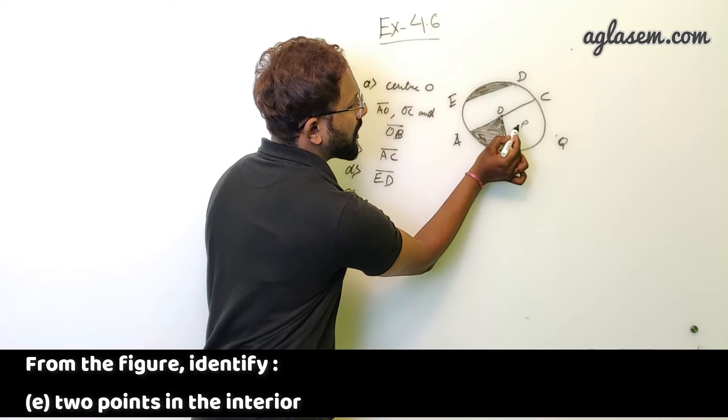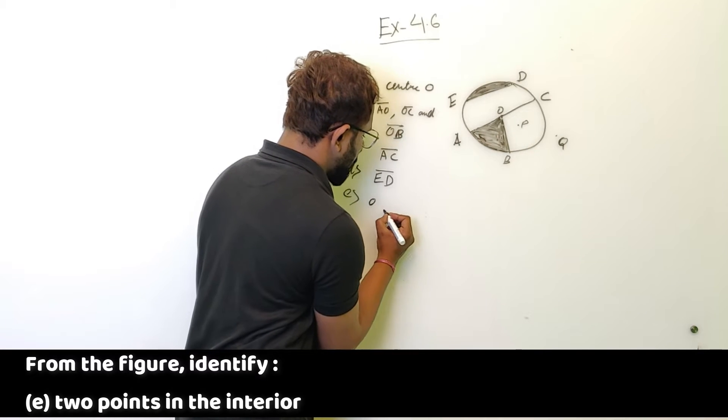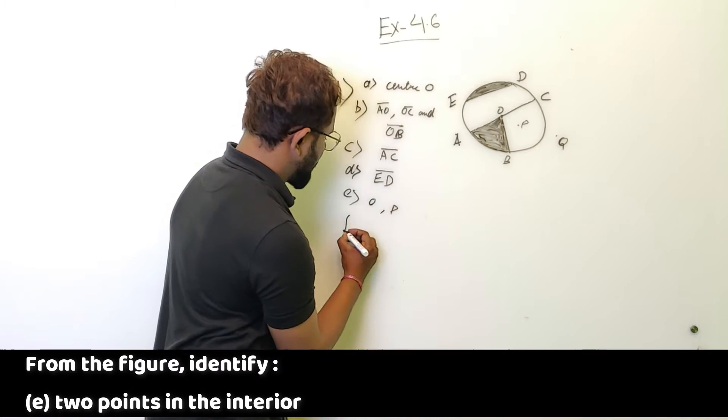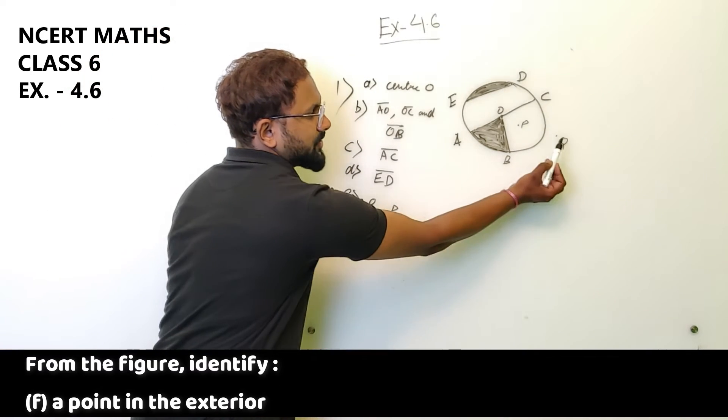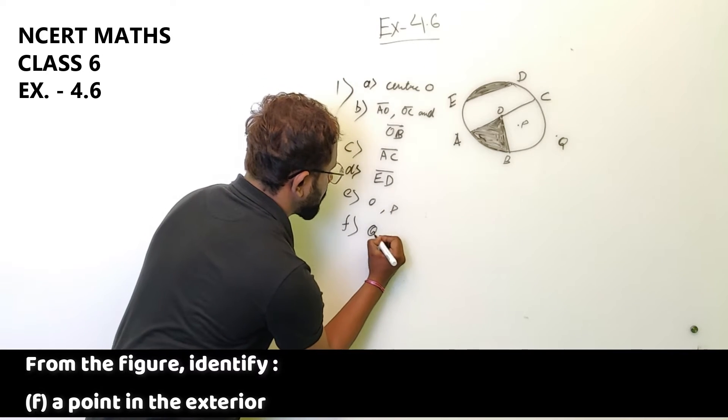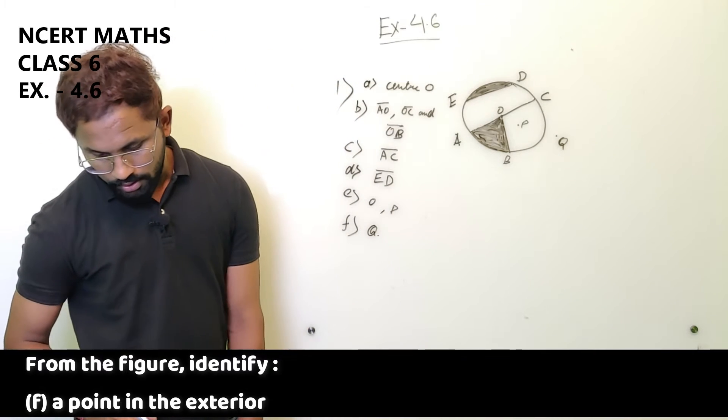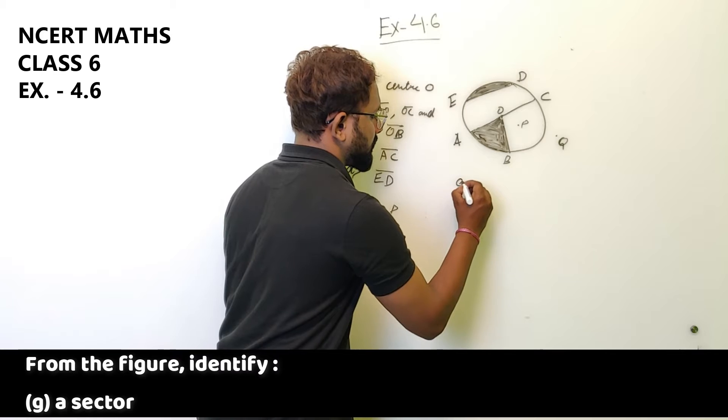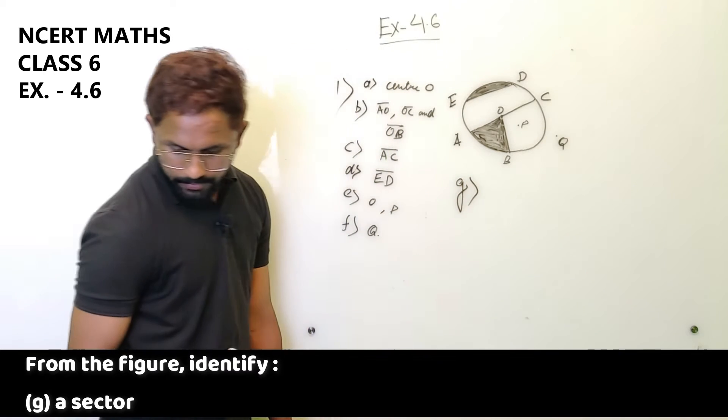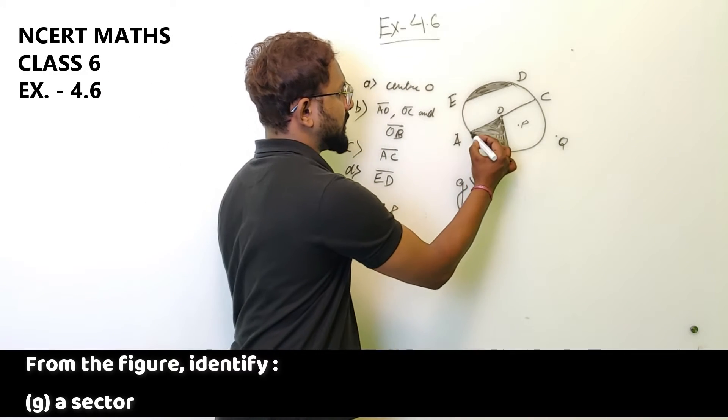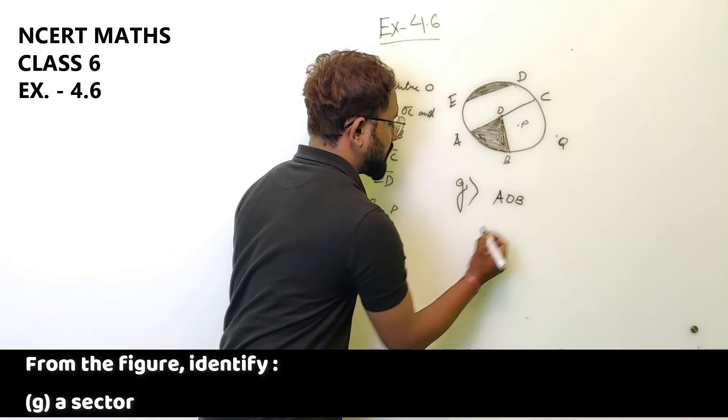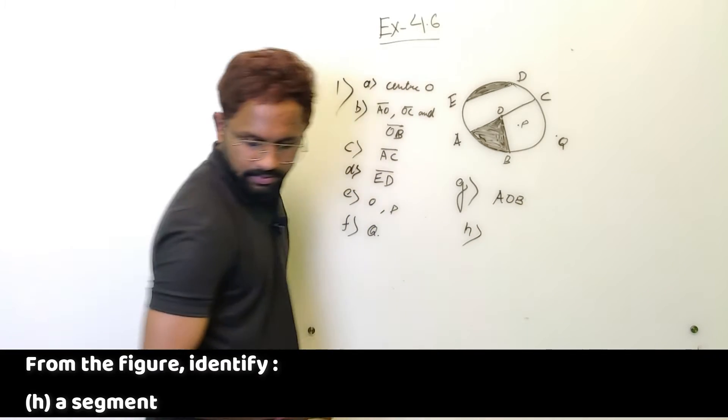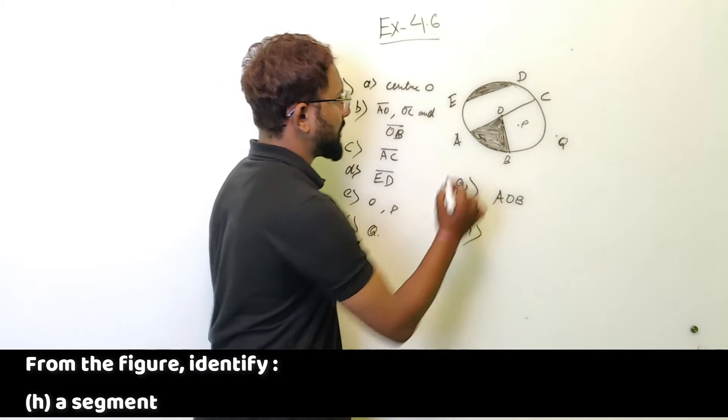E part is two points in the interior. So the two points in the interior are the center point O and point P. F part, a point in the exterior. So the point in the exterior is point Q. G, a sector. A sector is AOB. H part is a segment, so the segment is ED.